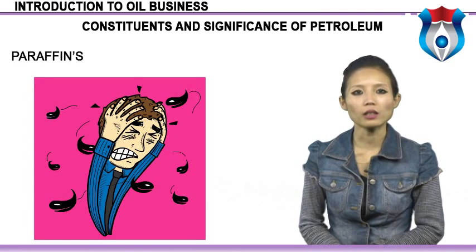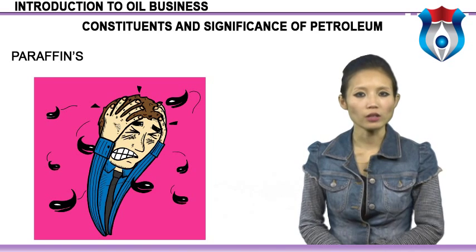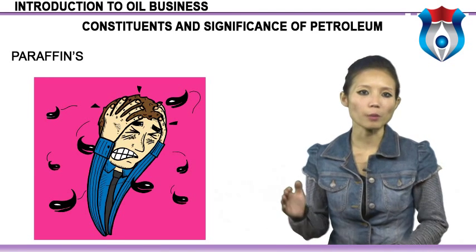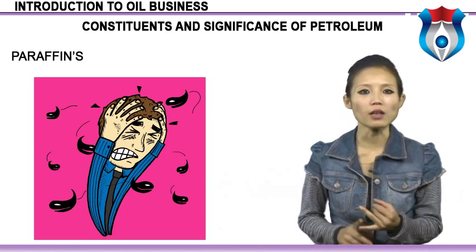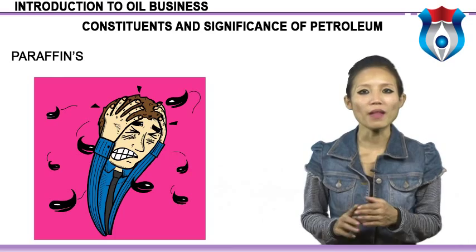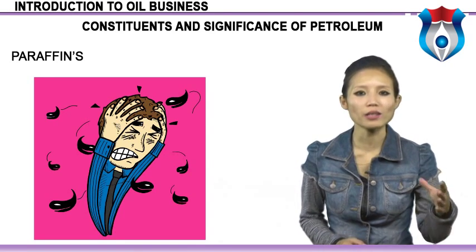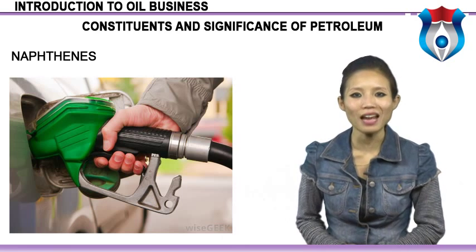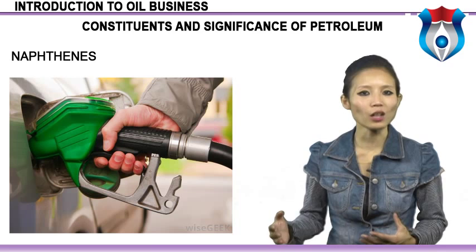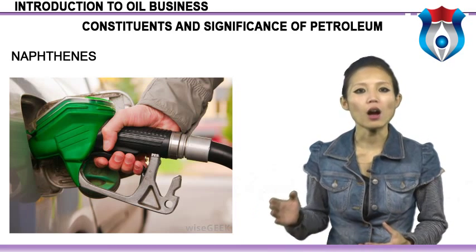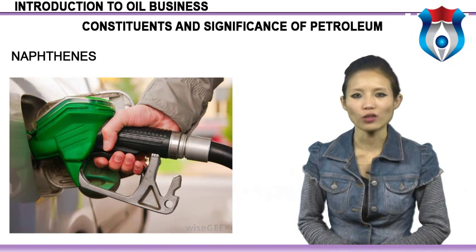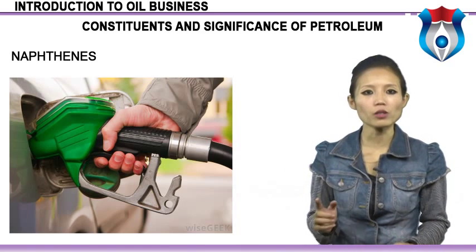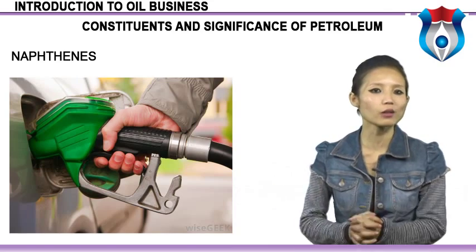Paraffins, or n-alkanes, have the general formula CₙH₂ₙ₊₂. For n=1 to 4, these are gases; from n=5 to 15, liquids; and above that, solids (paraffin waxes). The gases methane, ethane, propane, and butane form natural gas. Naphthenes have the general formula CₙH₂ₙ and form saturated ring compounds; cyclopentane and cyclohexane are common components of crude oils, often in the methyl form, together making up 2% or more of an average crude oil. In nature, only naphthenes with 5 or 6 carbons occur because of the range of bond angles that carbon can have.